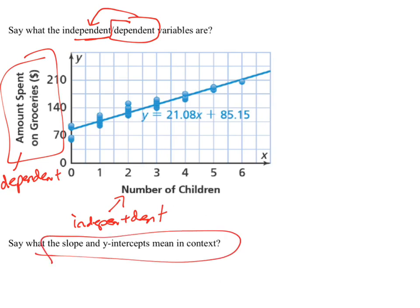On this one, slope and Y intercepts mean in the context. Your slope here at 21.08 is letting you know that the groceries is going to go up about $21.08 for every child. So go up one in X, how much does the Y go up? And then the Y intercept here, this is the Y value when X is zero. And so you look at when X is zero, that'd be zero children and it's the Y value, the amount spent on groceries. So you'd spend $85.15 if there were no children, that'd be what the Y intercept means.